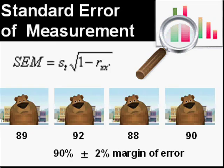Sometimes you may have heard the term standard error of measurement being used as well. For an example, let's say the bear does an exam four times and gets four distinct marks. We can see that the marks are close — we can say there's reliability — but the scores are all different. So standard error of measurement would say the score for this particular bear is 90% plus or minus a 2% margin of error.